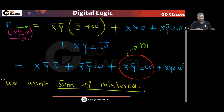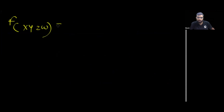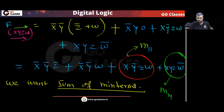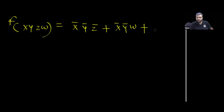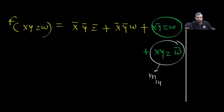The term XȲ·ZW: in the variable order X, Y, Z, W, this corresponds to 1-0-1-1, which is minterm number 11. The term XY·ZW̄ corresponds to 1-1-1-0, which is minterm number 14. Both of these are already minterms — nothing to expand.